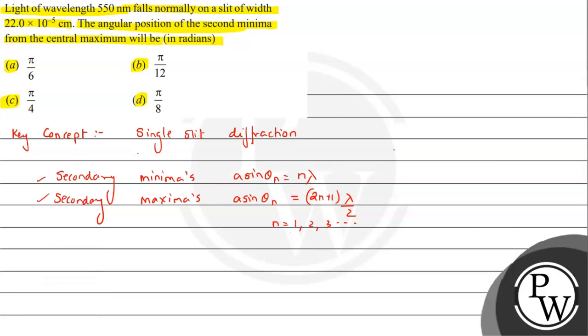From this discussion we will answer the question. Given: wavelength falls normally on a slit width a, given as 22×10^-5 centimeters, which will be 22×10^-7 meters. We need to find the angular position θ of the second minima, where n=2, from central maxima.